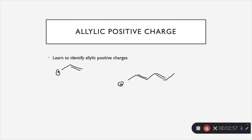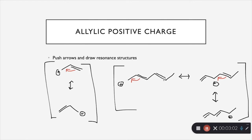With an allylic positive charge, we're always going to move the electrons towards the positive charge to fill the hole. You can see here that we're moving the double bond to create a new double bond, and there's always going to be one arrow — you can see that with all of these examples. Remember that these are patterns, so it's going to be the exact same every single time. Always check the formal charges after doing this arrow pushing.